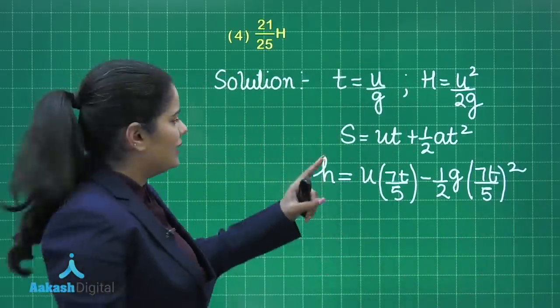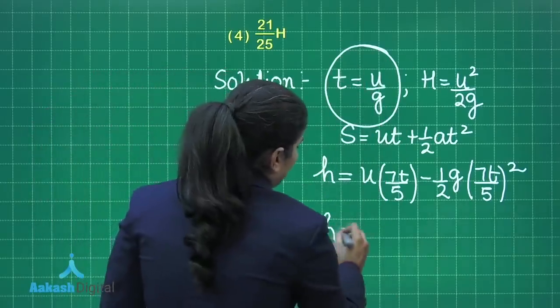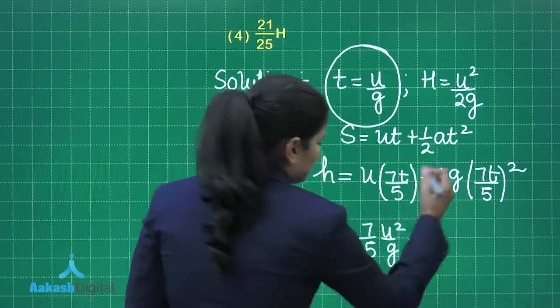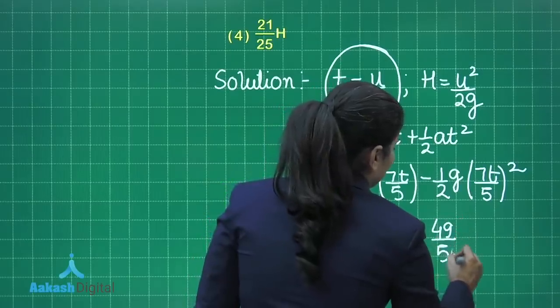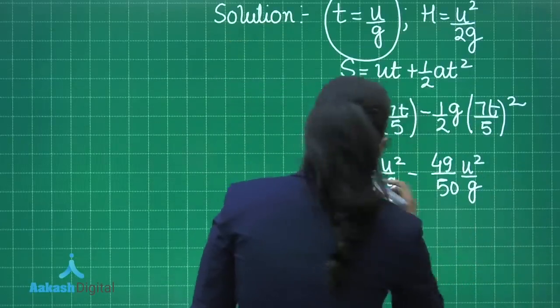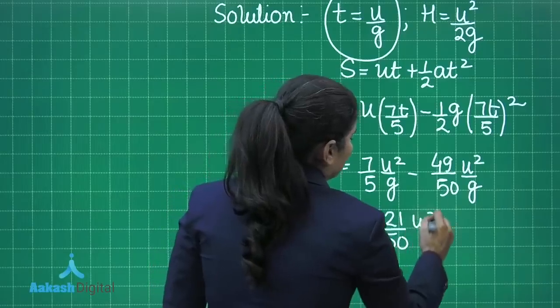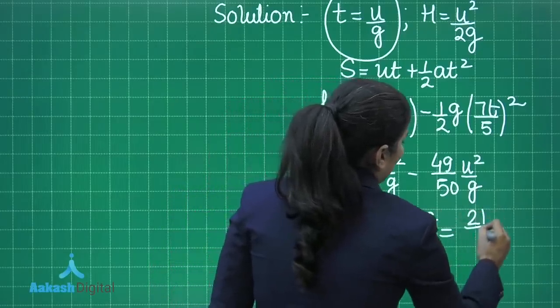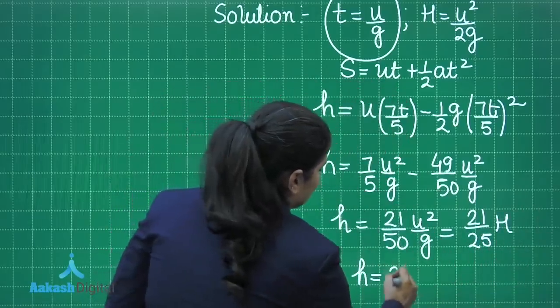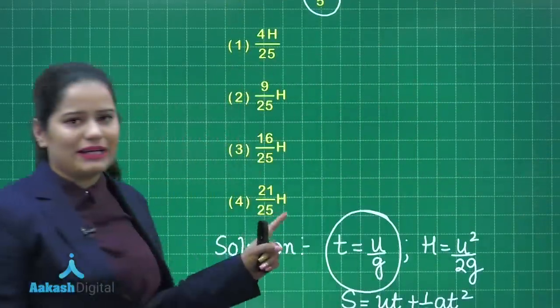If I just substitute the value of t here as U by g, which can be written as 7 by 5 u square by g and this will be 49 by 50 u square by g. On solving this I will get h as 21 by 50 u square by g, and that can be written as 21 by 25 capital H. So this h is 21 by 25 H. Option number 4 is the correct option.